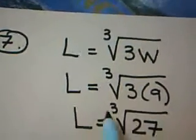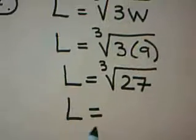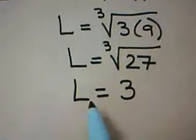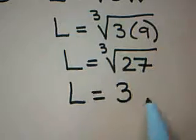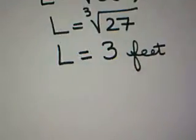And remember, when you're finding the cube root of 27, what number multiplied by itself 3 times would give you 27? And that answer would be 3. So the length of the bird's wingspan would be 3 feet. Always remember to give your answer in units.